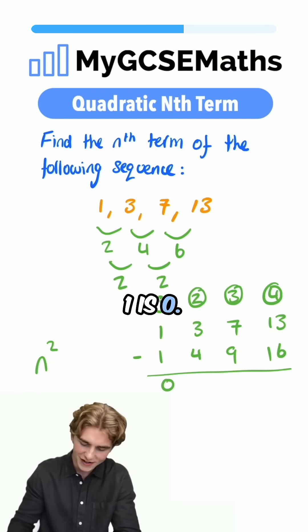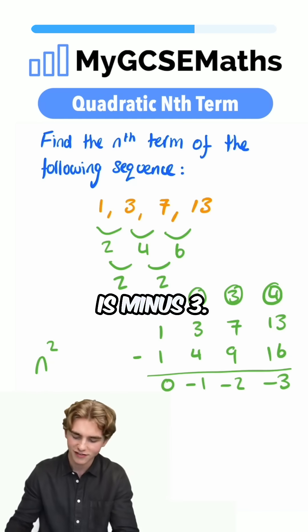1 subtract 1 is 0, 3 subtract 4 is minus 1, 7 take 9 is minus 2, 13 take 16 is minus 3.